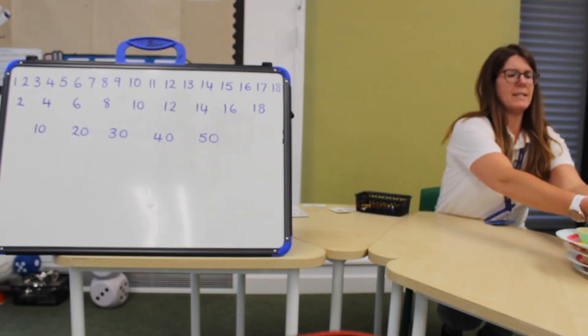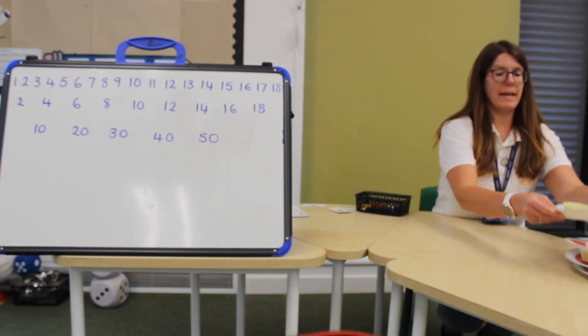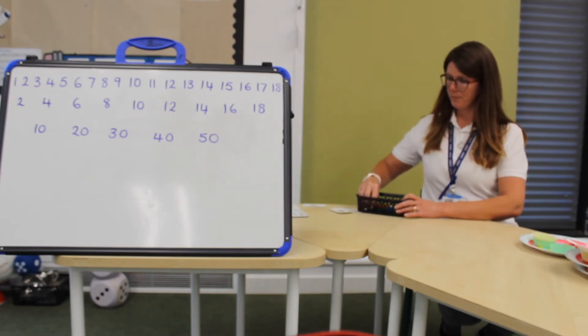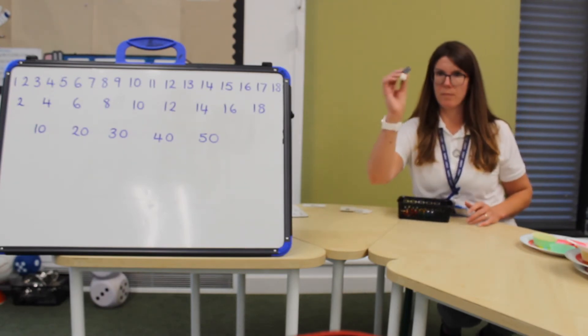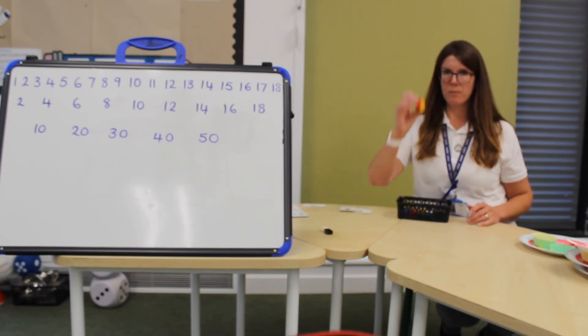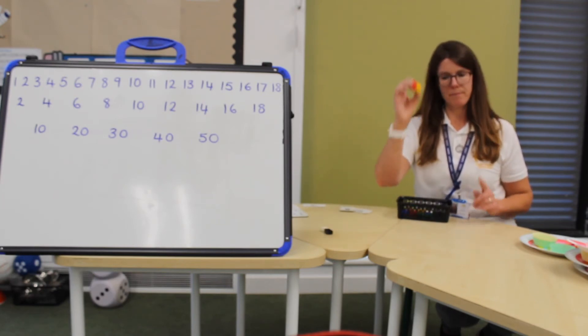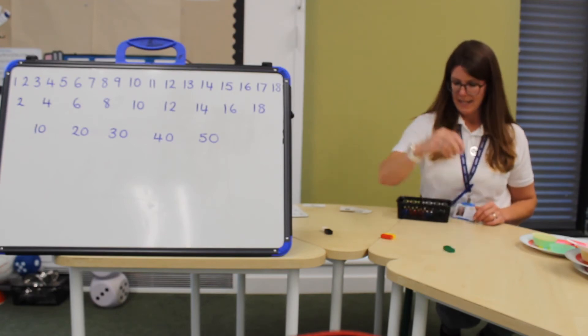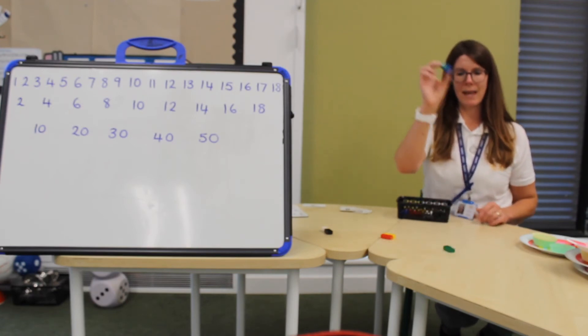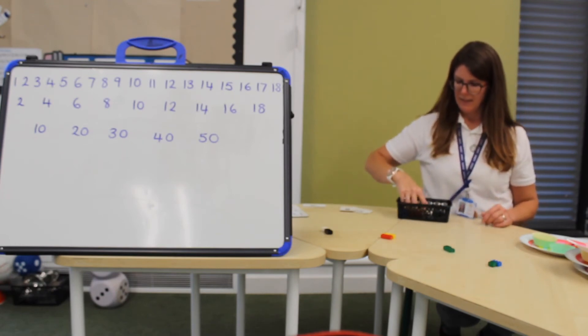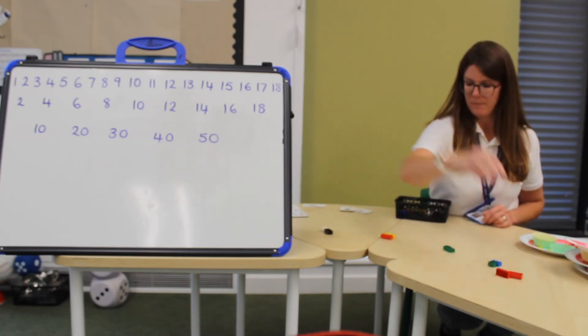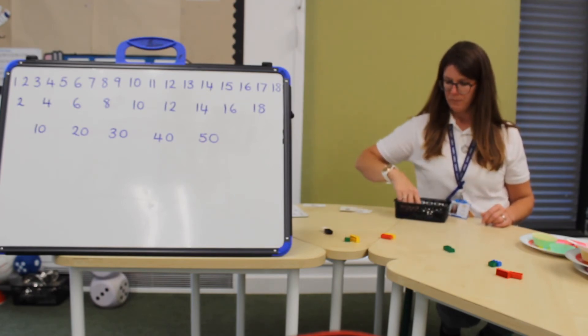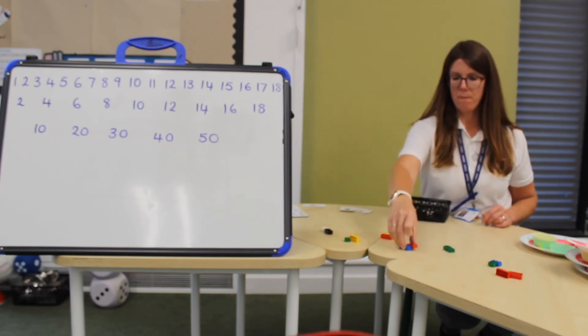Instead of five this time, I'm going to make groups of two. One, two, three, four, six, eight, ten, twelve, fourteen, sixteen.